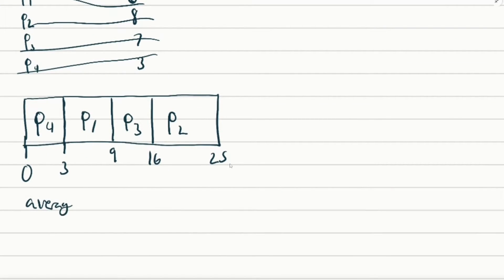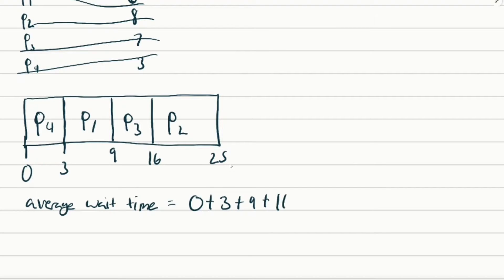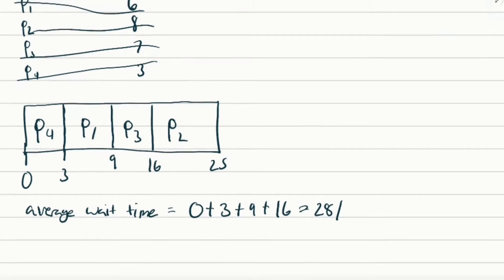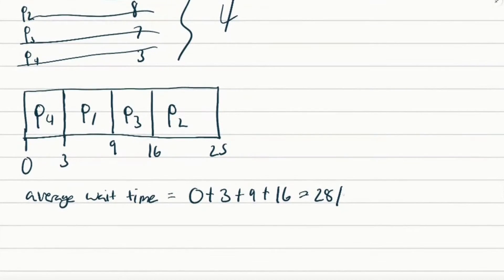To calculate the average wait time: P4 waited 0, P1 waited 3 milliseconds, P3 waited 9 milliseconds, and P2 waited 16 milliseconds. We add them all up — that's 28 — and divide by 4 processes, which equals 7 milliseconds. That's the shortest job first average wait time.